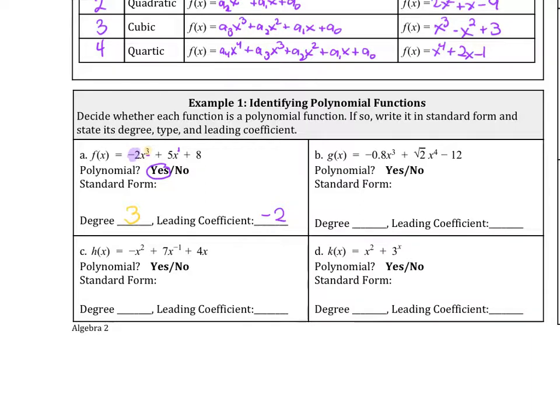So letter b, we have negative 0.8x cubed plus square root of 2x to the 4th minus 12. Is this a polynomial? Yes, it is.